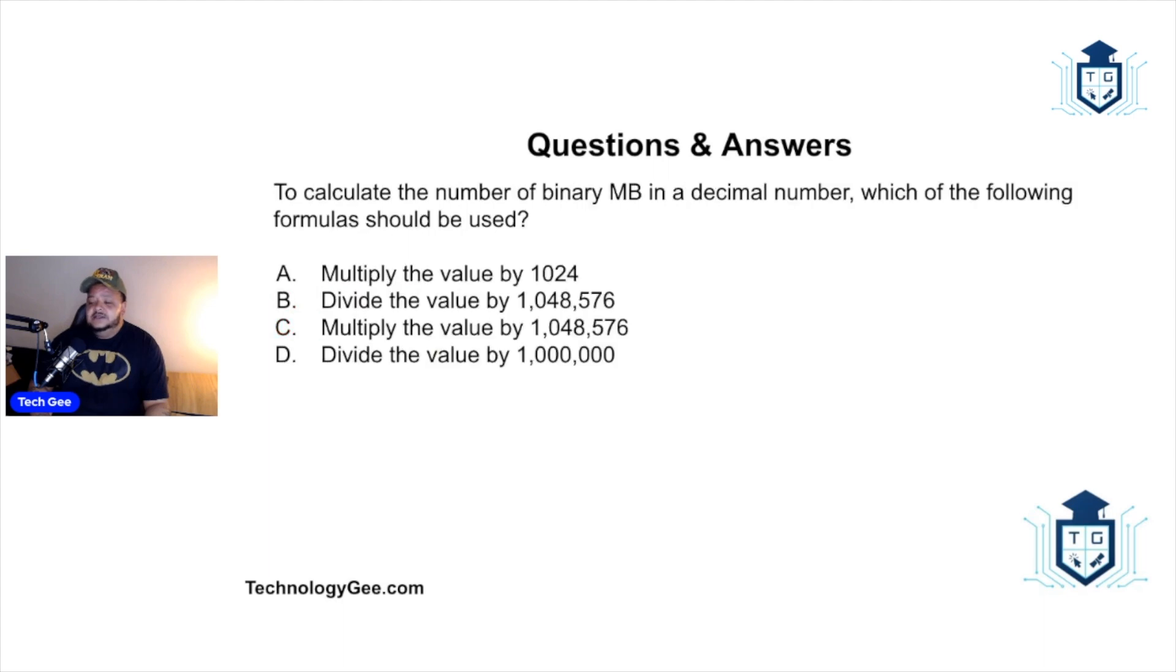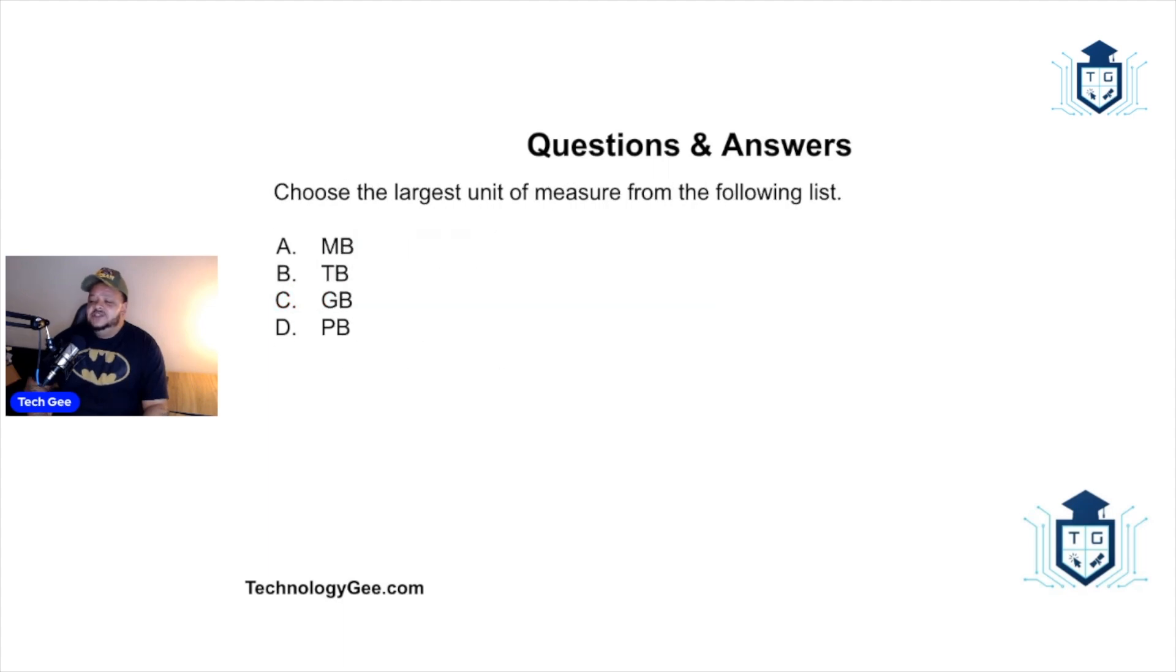Next question: choose the largest unit of measure from the following list - megabyte, terabyte, gigabyte, or petabyte. The correct answer would be a petabyte. A petabyte is 1024 terabytes, so it goes megabyte, gigabyte, terabyte, then petabyte.